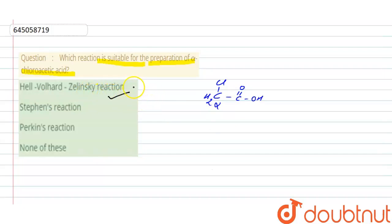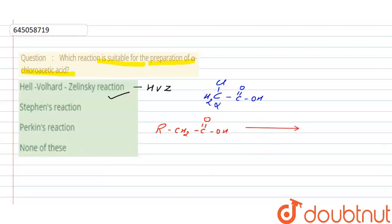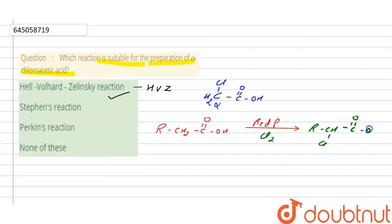The reaction by which we can prepare alpha-chloroacetic acid is called the Hell-Volhard-Zelinsky (HVZ) reaction, also known as alpha-halogenation. In this reaction, we have RCH2-COOH treated in the presence of red phosphorus and Cl2, and we obtain RCHCl-COOH, where the alpha carbon bears the halogen.